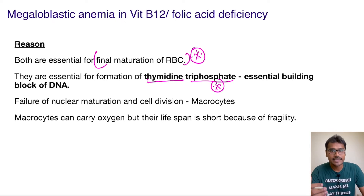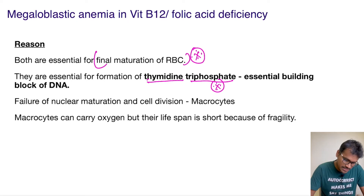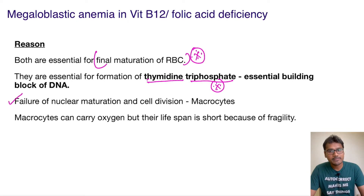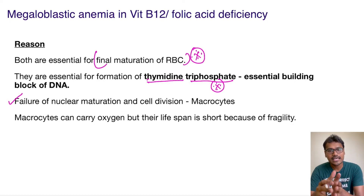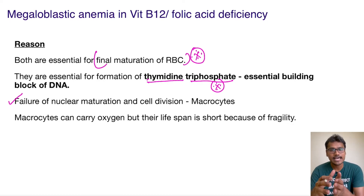Because thymidine triphosphate production is impaired, DNA synthesis of the RBCs is greatly reduced. This results in failure of nuclear maturation as well as cell division.